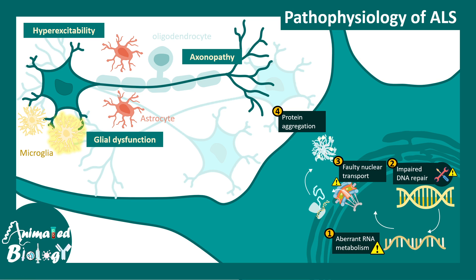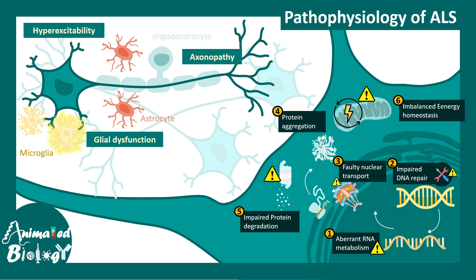Even after proteins are produced, they aggregate together due to unknown reasons in many cases. The protein degradation or protein quality control mechanism is impaired — proteins are not degraded. These aggregated proteins affect mitochondrial biogenesis, leading to imbalanced energy homeostasis in neurons. Additionally, a massive amount of oxidative stress is responsible for functional impairment of the neuron, as many genes that regulate defense against oxidative stress become mutated.